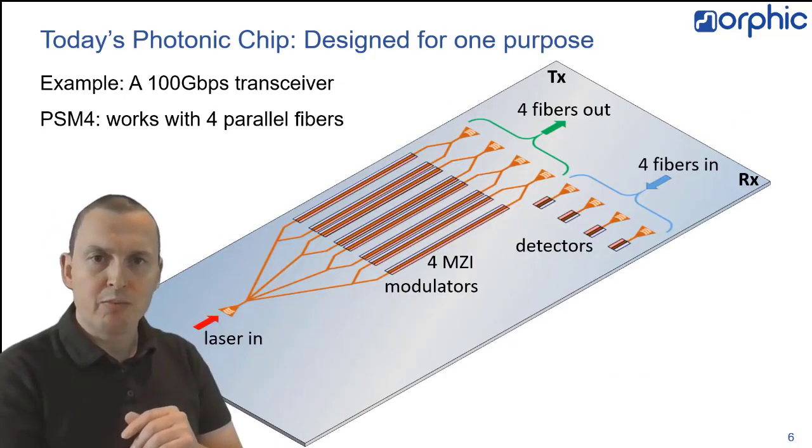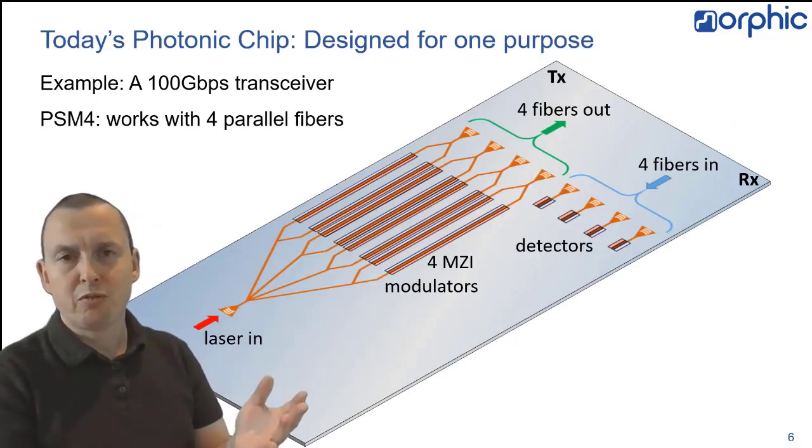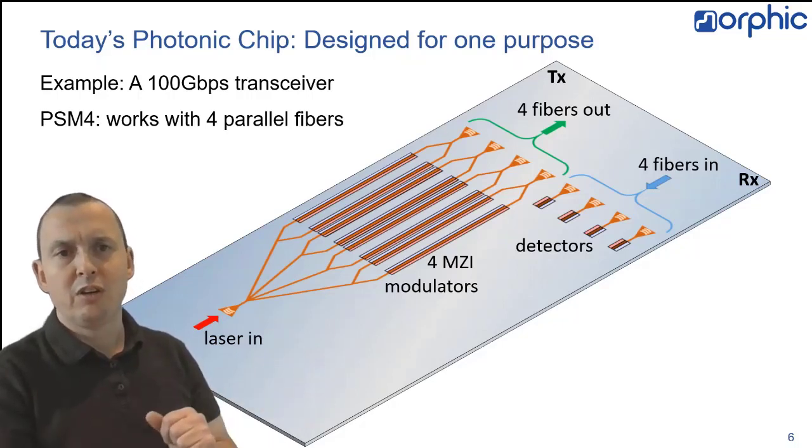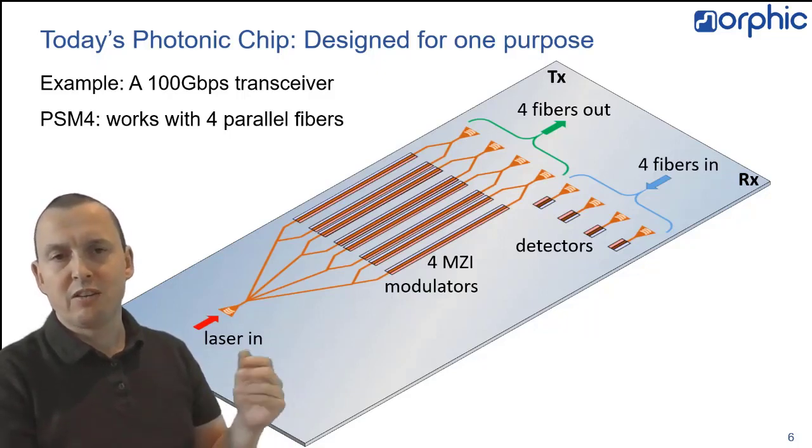So as just an example, if you want to make a transceiver for parallel single-mode fiber, today, you take four MZI modulators, put them together with four detectors on a chip, and integrate them with fiber interfaces and a laser, and you have a transceiver.